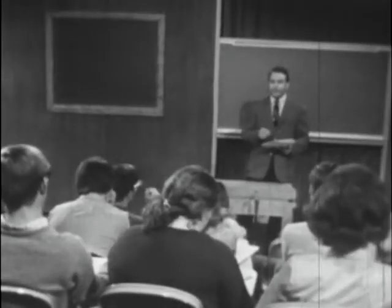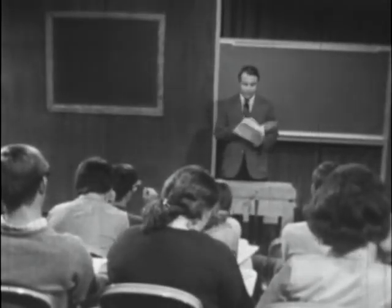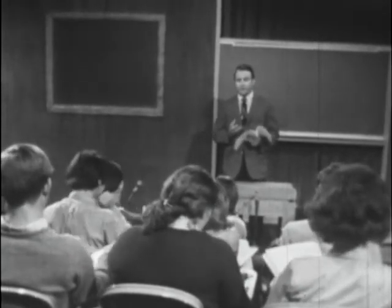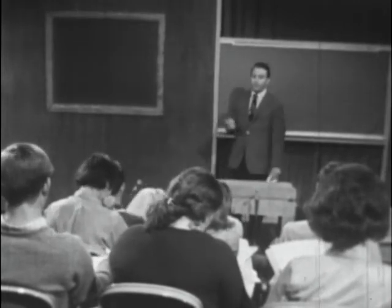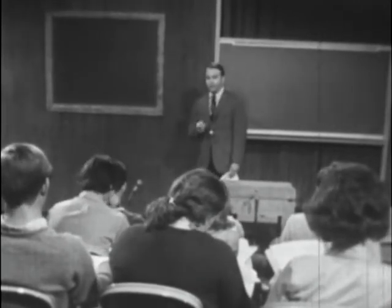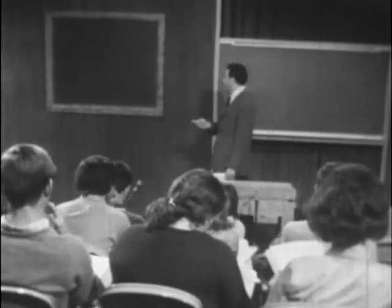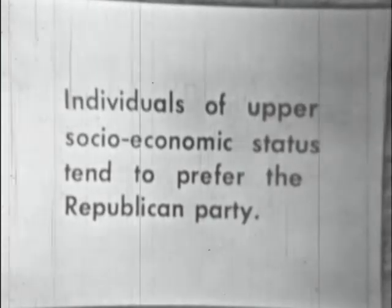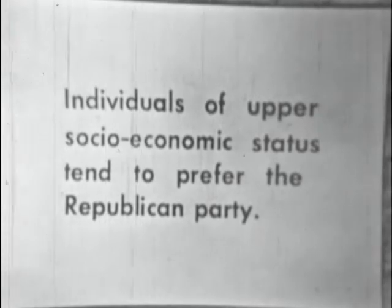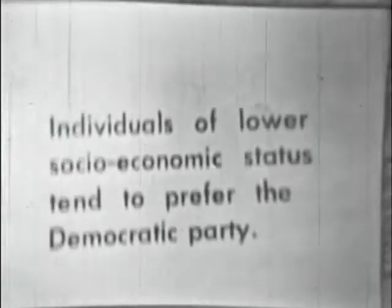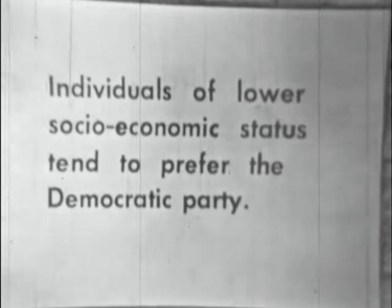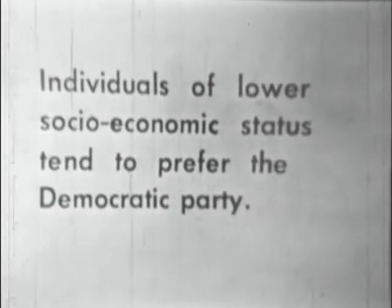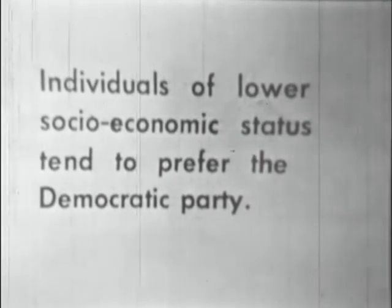Perhaps, like Nick, Ernie, and Terry did, we can refer to Tables 13 and 14 to see very clearly how those relationships were established. Perhaps we can sum up this part of the discussion by looking at the slide on the screen, which shows that individuals of upper socioeconomic status tend to prefer the Republican Party, and individuals of lower socioeconomic status tend to prefer the Democratic Party.